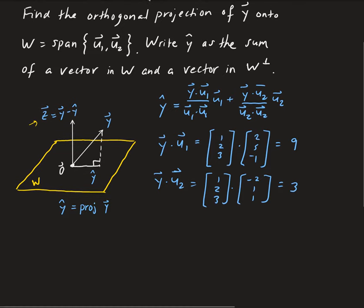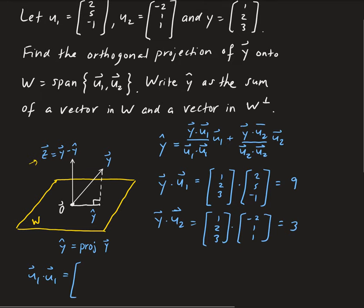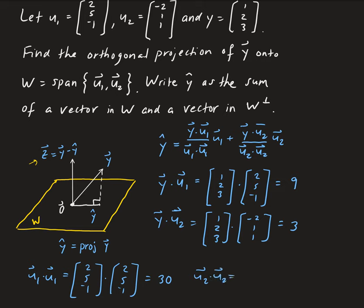Now we find the dot product of u1 with itself. u1 is [2, 5, -1], so that gives us 4 plus 25 plus 1, which equals 30. And then we take u2 dotted with itself. u2 is [-2, 1, 1], so we get 4 plus 1 plus 1, which gives us 6.